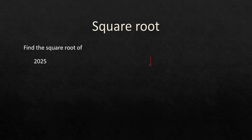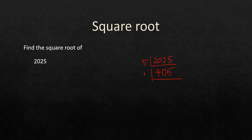Now let's move on to the next problem: find the square root of 2025. We will follow the same method. Since 2025 ends in 5, I can divide by 5: 2025 ÷ 5 = 405, ÷ 5 = 81. My objective is always to get numbers in pairs.